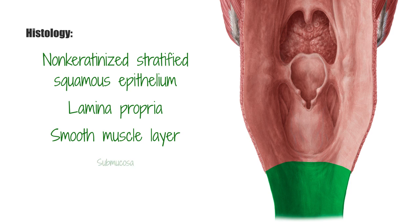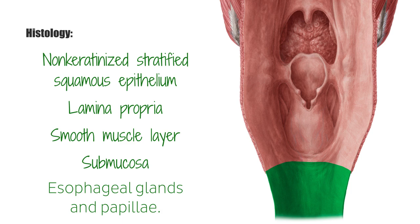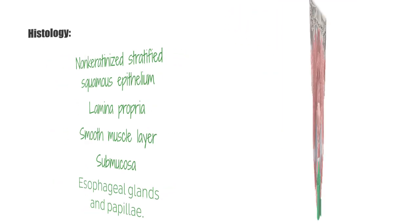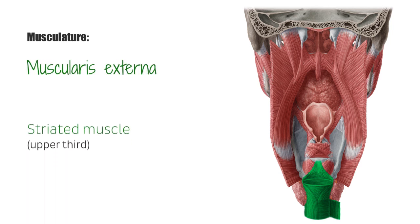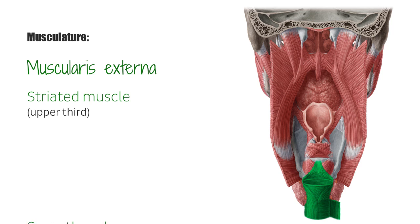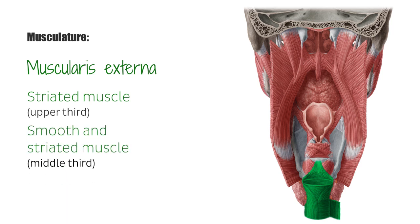The submucosa is next and contains mucus-secreting glands known as the esophageal glands and papillae comprising of connective tissue. The muscularis externa, or muscularis propria, is made of striated muscle on the upper third, smooth and striated muscle on the middle third, and just smooth muscle on the lower third. This is due to the different functions that the upper third performs, such as swallowing. The last layer is the fibroareolar adventitia.